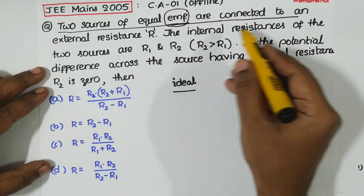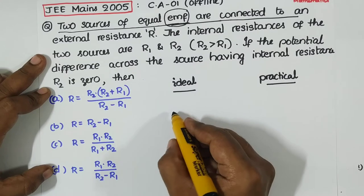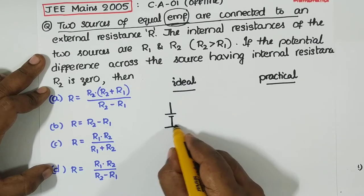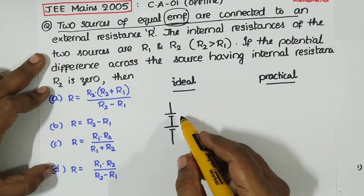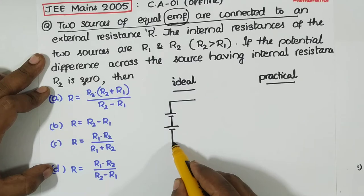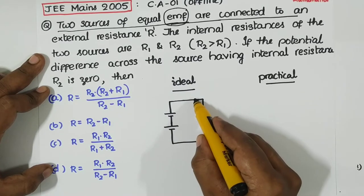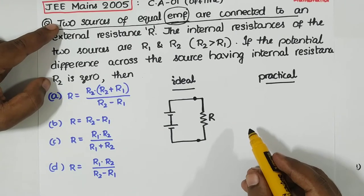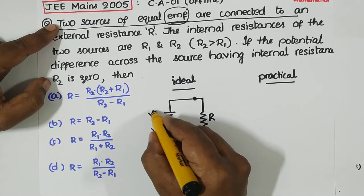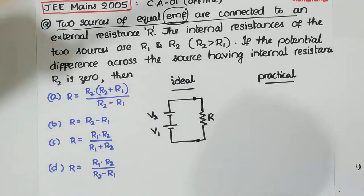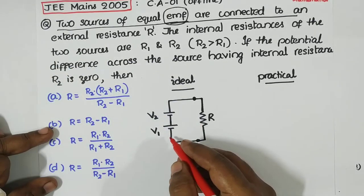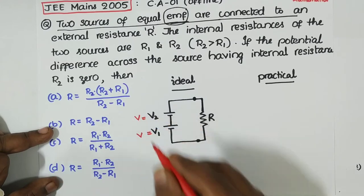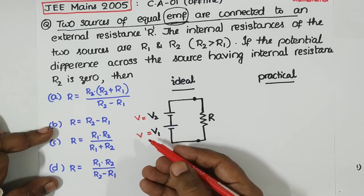Two sources of equal EMF are connected to a resistance R. I have a DC source — EMF source 1 — and one more. These two are connected in series, and across the two terminals we have a resistor R. Since two sources of equal EMF are given, let's say this is V1 and this is V2, so V1 equals V2 equals V.